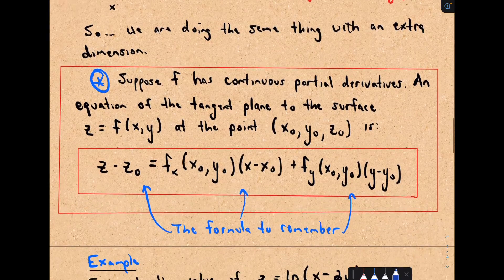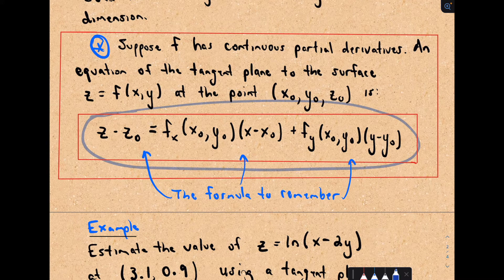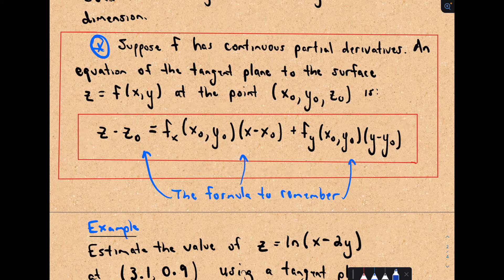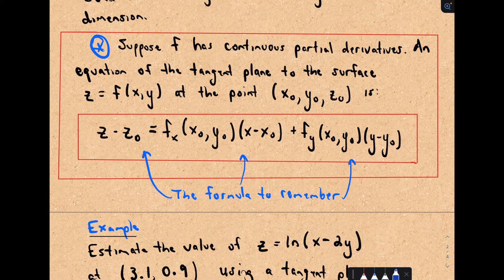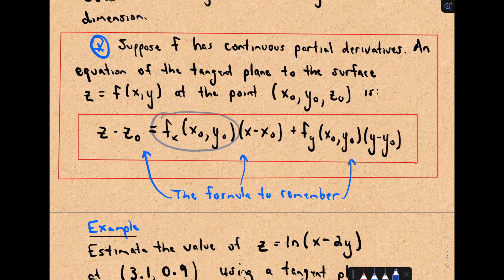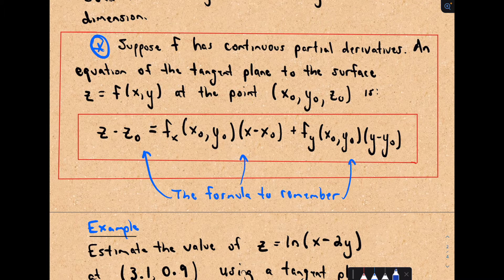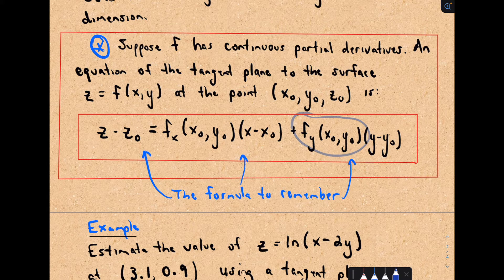So the formula you need to remember, it's pretty similar to when you do a linearization in two dimensions. So in this case, we'll take z minus the z coordinate. And now we have to calculate these partial derivatives. So I take the partial of x, plug in our point, multiply it by x minus the x coordinate.